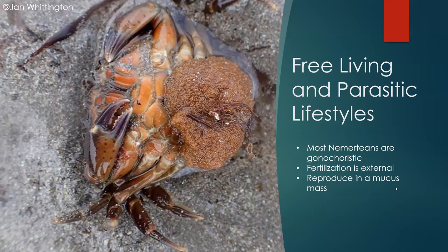The image here shows a crab that has died after being infested with a species of nemertean called Carcinonemertes carcinophilia. This species of worm, as an adult, lays its eggs over the eggs of the infected crab. Scores, or even hundreds, of female worms will lay their eggs over the crab's eggs, and males will join in to fertilize them in what is called a mucus mass. These eggs hatch, and the larvae begin to devour the gonads and reproductive organs of the crab, leading to sterilization, if not death.